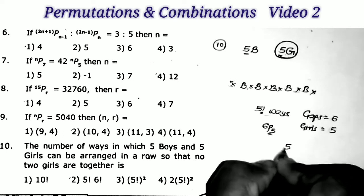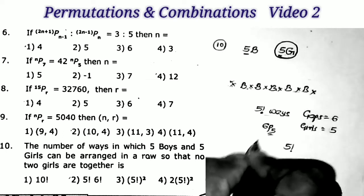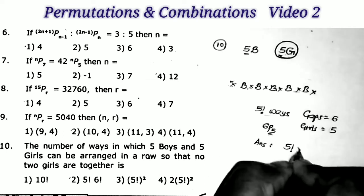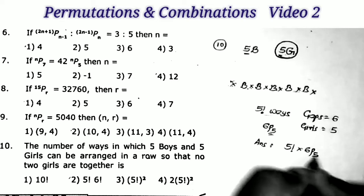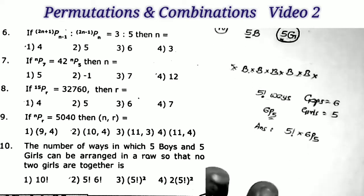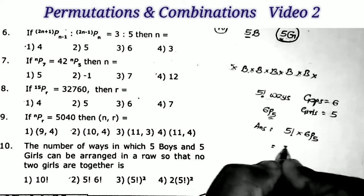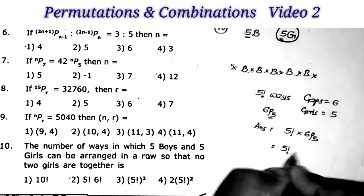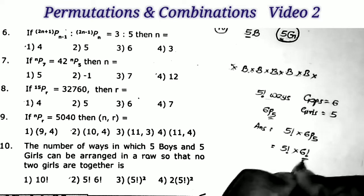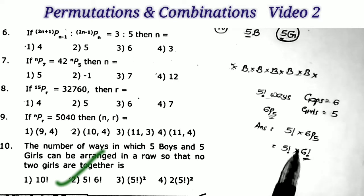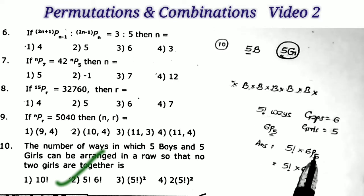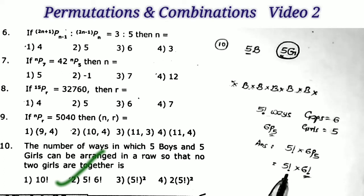Therefore the answer is five factorial into 6P5. The value of 6P5 is equal to six factorial, so the answer is five factorial into six factorial. That is the second option.